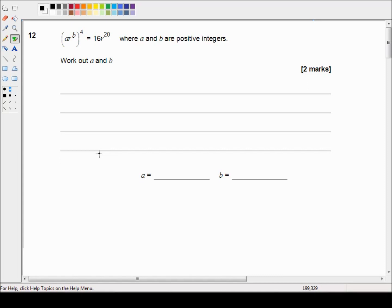It is a calculator paper so we are allowed to use calculators and we're picking up in question 12 which reads (ar^b)^4 = 16r^20 where a and b are positive integers, work out a and b.